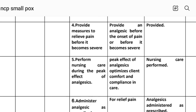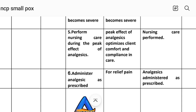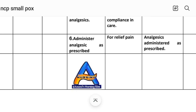Intervention number four: provide measures to relieve pain before it becomes severe — administer analgesics before the onset of pain or before it becomes severe. Intervention number five: perform nursing care during the peak effect of analgesics. Rational: peak effect of analgesics optimizes client comfort and compliance in care. Implementation: nursing care performed at peak analgesic effect. Intervention number six: administer analgesics as prescribed.